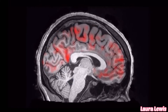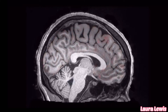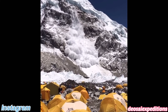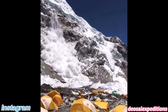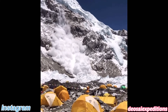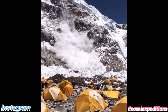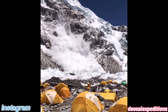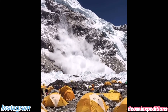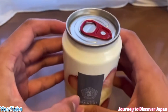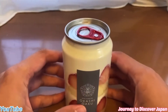This is how our brain removes the spinal fluids when we're sleeping. A vending machine in Japan was giving out cake in a can.